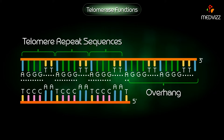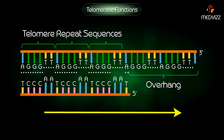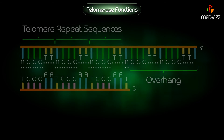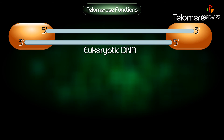Since DNA replication can only proceed in the 5' to 3' direction and requires a primer, it is not possible for a DNA polymerase to replicate the 3' ends of linear chromosomes. If this problem were not corrected, chromosomes would shorten with each cycle of DNA replication.